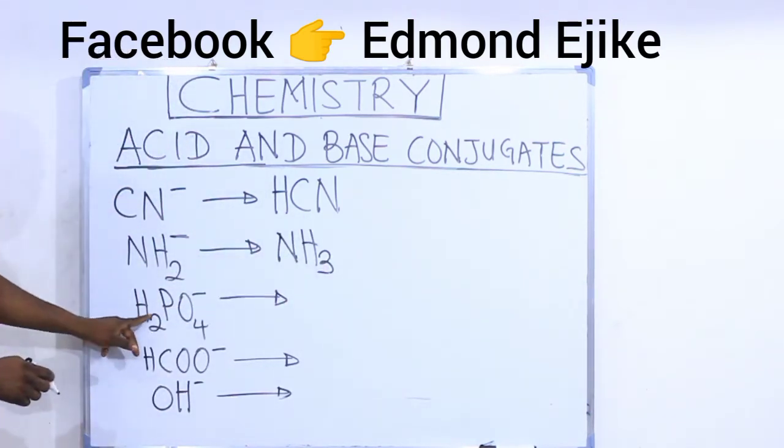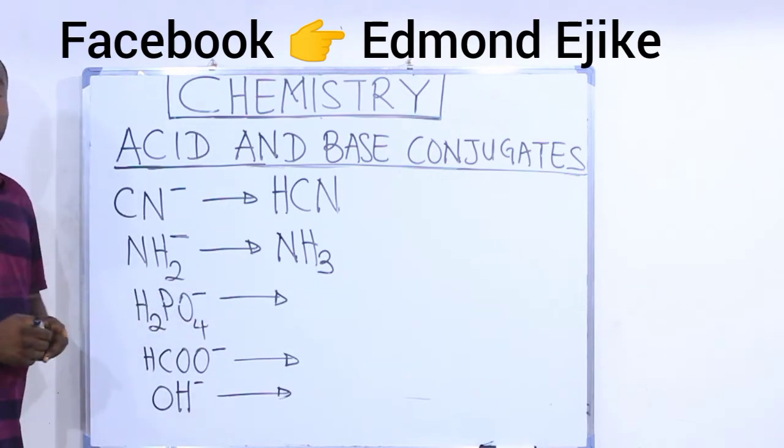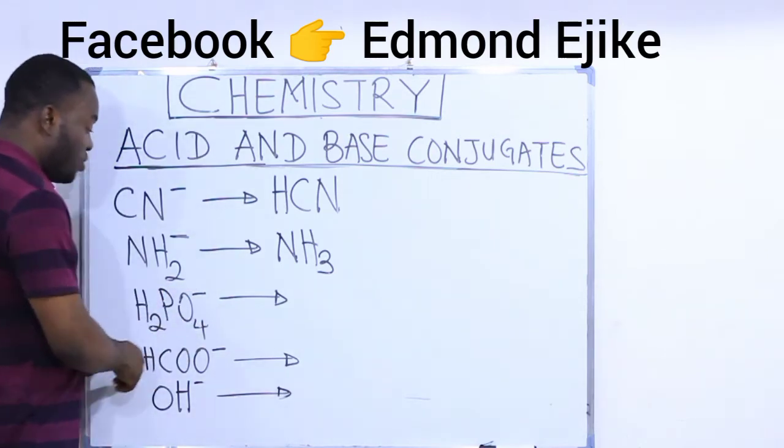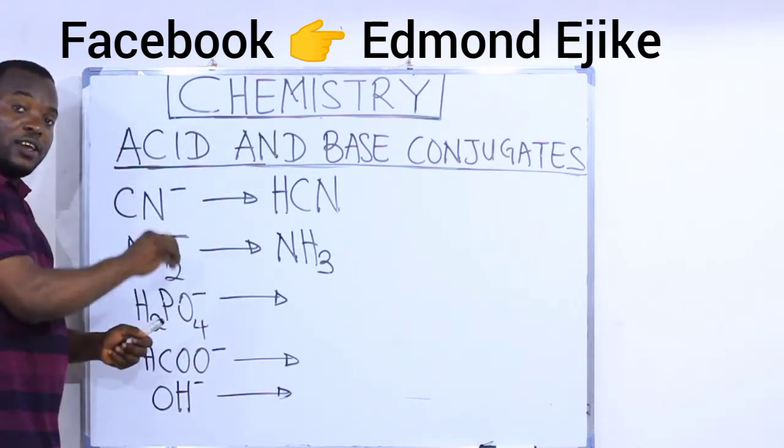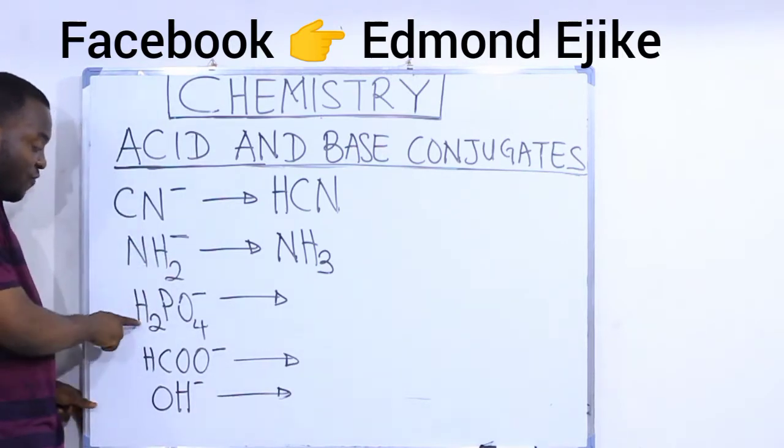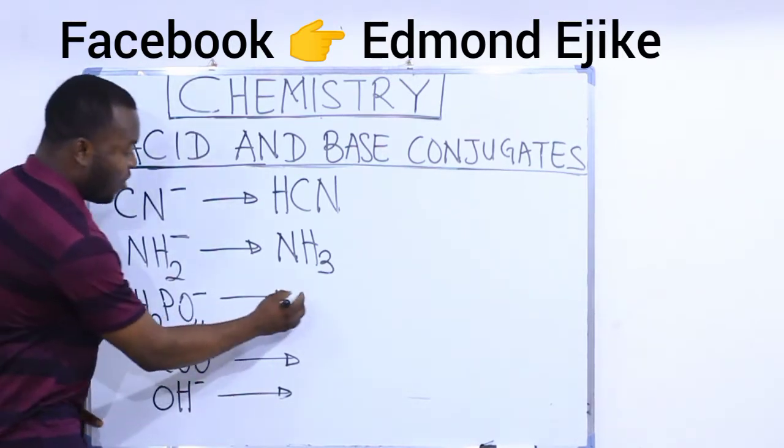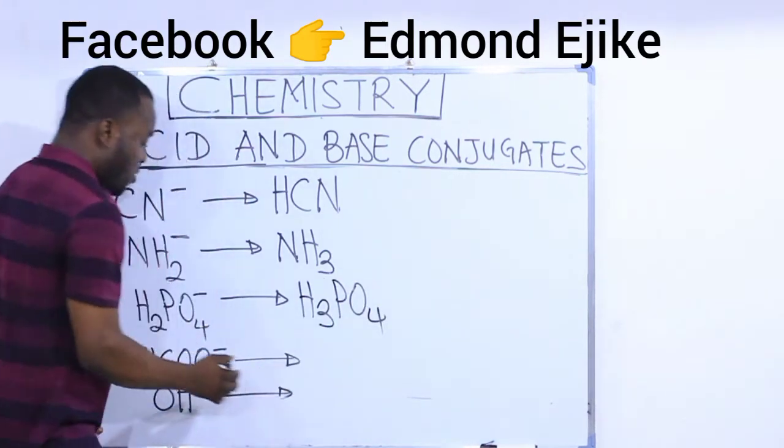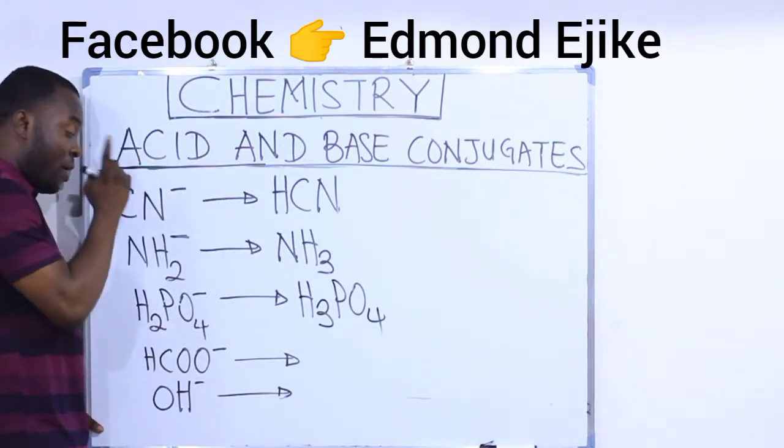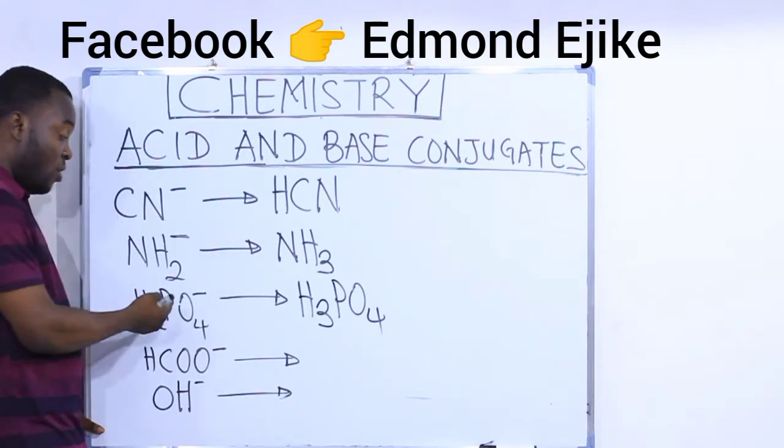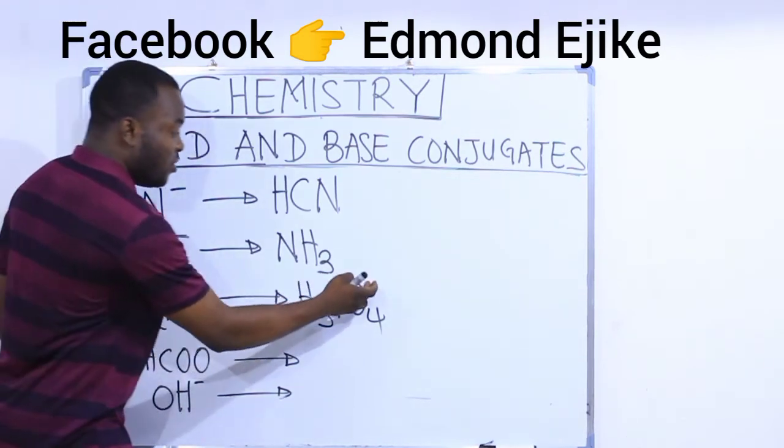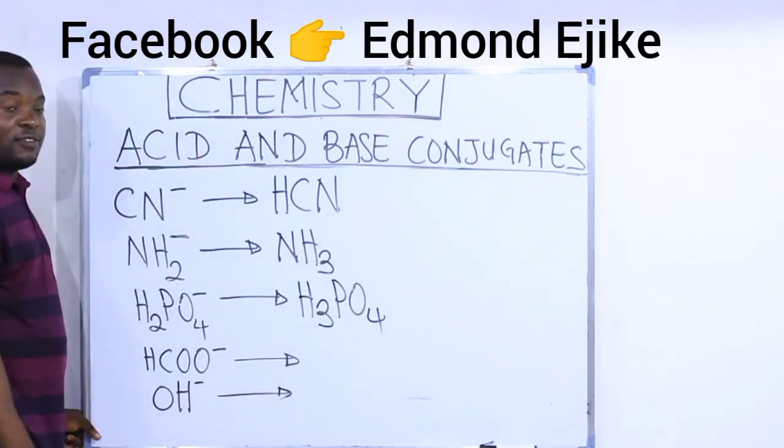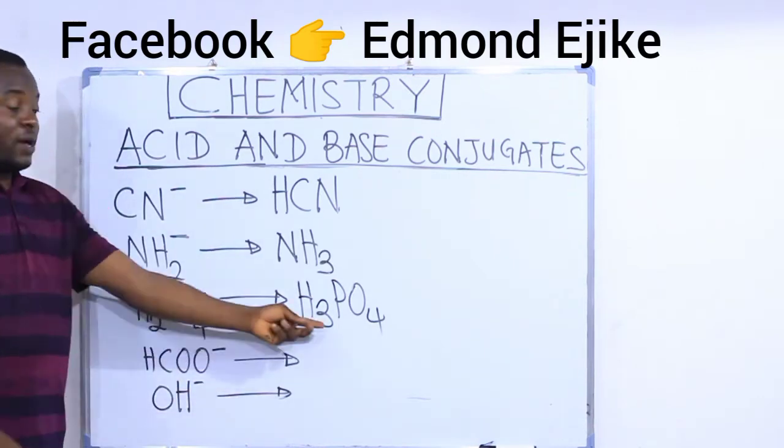The next one says H2PO4 minus. To find the conjugate acid of this, I will add one H, add one plus charge. If I add one H to two H, I will have three H. H3PO4. If I add one plus sign to this minus here, these signs will neutralize. So there will be no charge. So this is my answer.